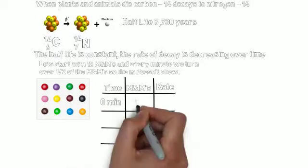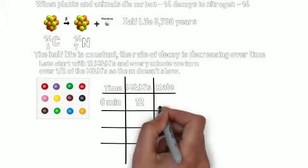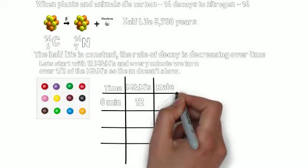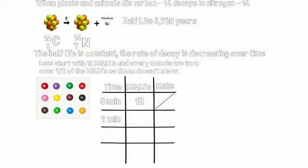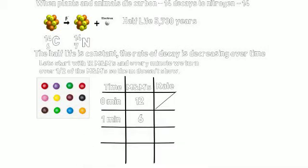And the M&Ms are the M&Ms remaining. So at 0 minutes, we have all 12 of our M&Ms, and we're not going to even worry about the rate at this point, because we haven't turned anything over yet. But after 1 minute, we're only going to have 6 M&Ms remaining with the M showing, so we've turned over 6 per minute during that first minute.